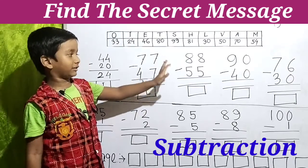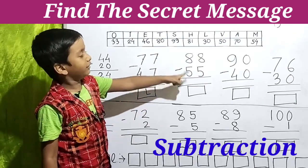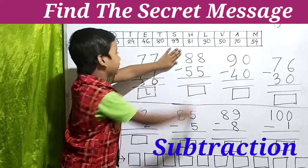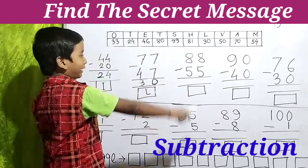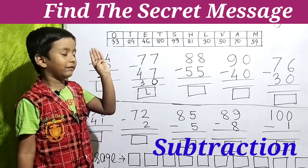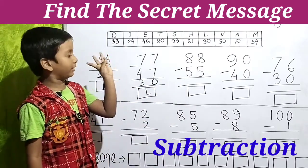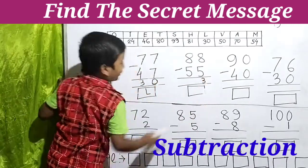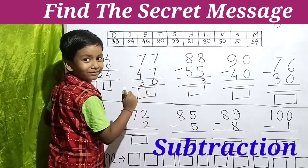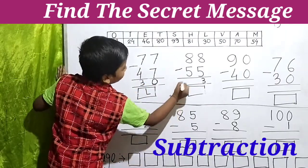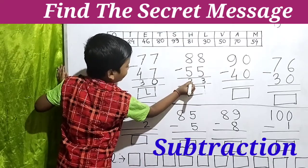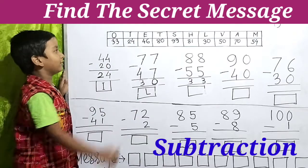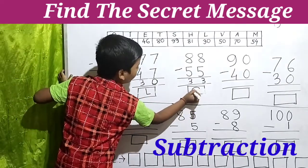The next subtraction is 88 minus 55. We have to first do the ones: 8 minus 5 — let's count: 5, 6, 7, 8 — that's 3. We write 3. Because the tens are the same, we write 3 also for the tens. So 88 minus 55 equals 33, and 33 means O. We write O here.